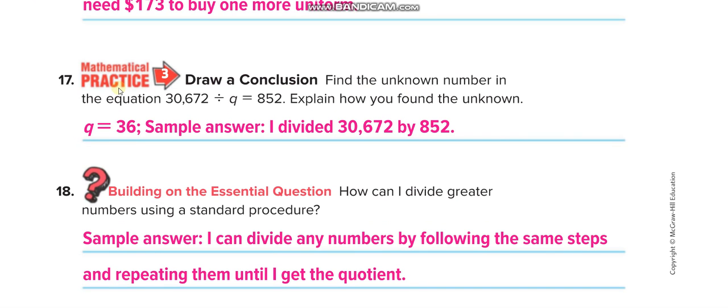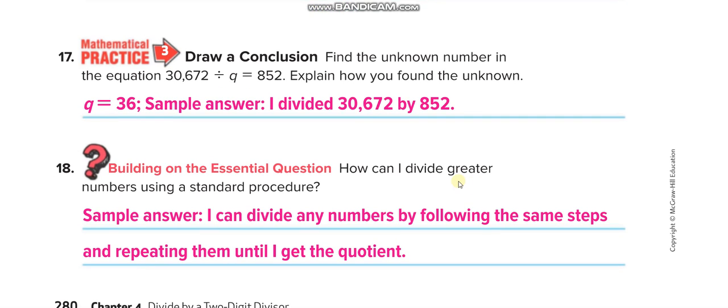Find the unknown number in the equation. This one you divide them and you get 36. How can I divide greater numbers using standard procedure? I can divide any numbers by following the same steps and repeating them until I get the quotient.